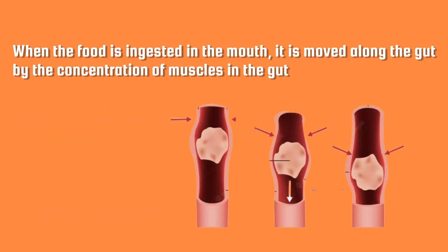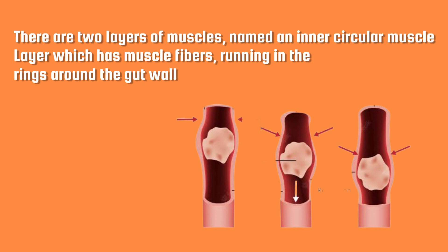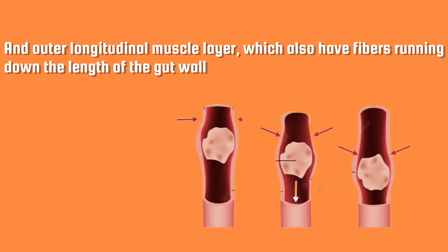When the food is ingested in the mouth, it is moved along the gut by the contraction of muscles in the gut wall. There are two layers of muscles: an inner circular muscle layer, which has the muscle fibers running in rings around the gut wall, and an outer longitudinal muscle layer, which has fibers running down the length of the gut wall.